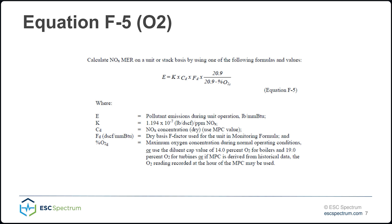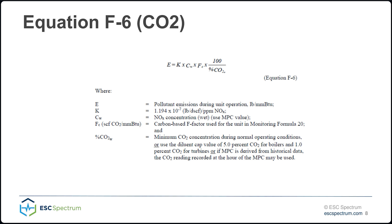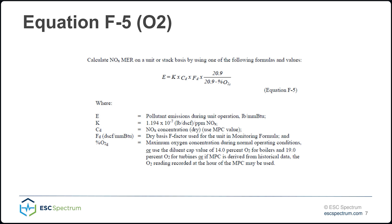When I'm doing this, there are a few options. Your maximum oxygen concentration during normal operating conditions, or the diluent cap of 14% for boilers and 19% for turbines. Or if the MPC is derived from historical data, the O2 reading recorded at the hour of the MPC may be used. I'm pretty conservative, so I'm going to probably use the diluent cap of 14 or 19 where applicable. Do whatever is more applicable for your site — you know how it operates more than anybody else. Equations 19.1 and F5 are identical.